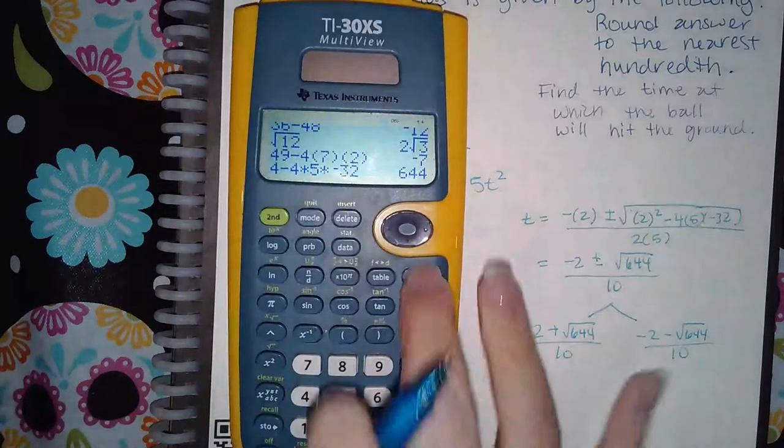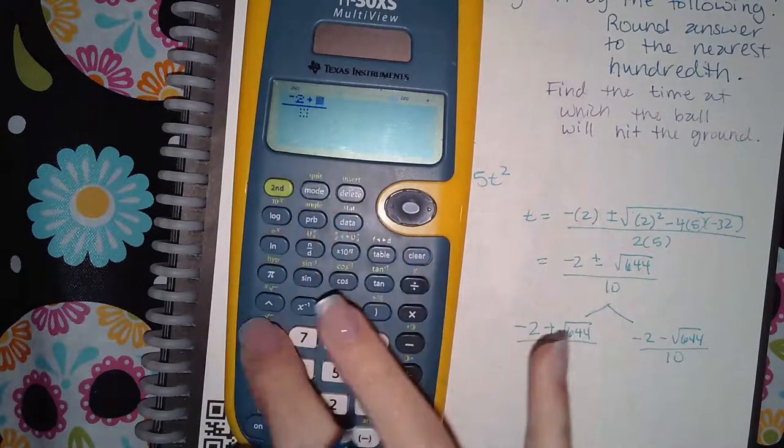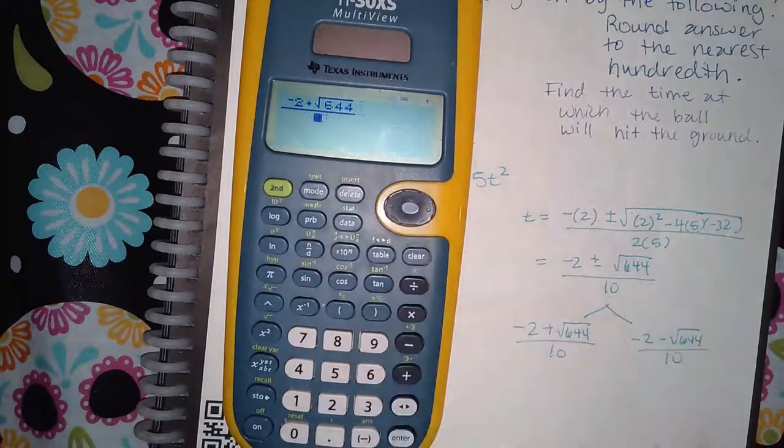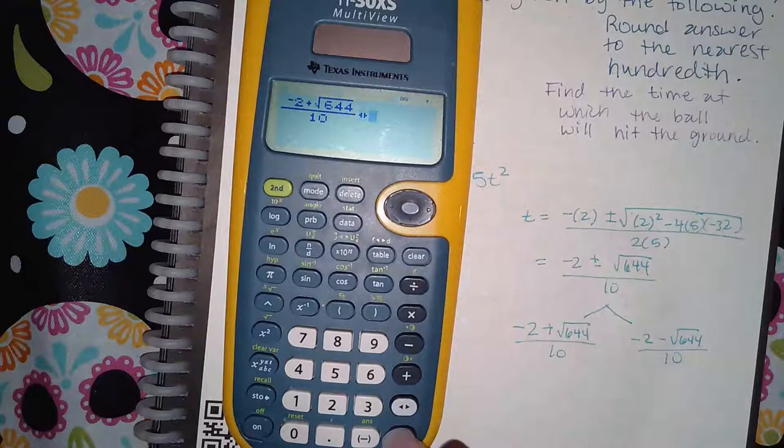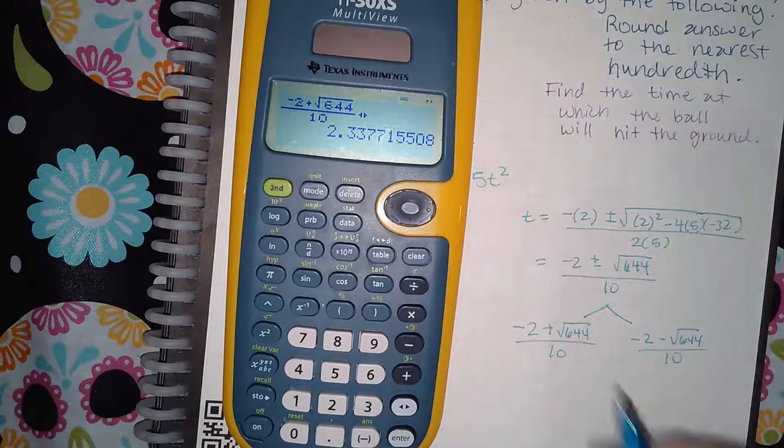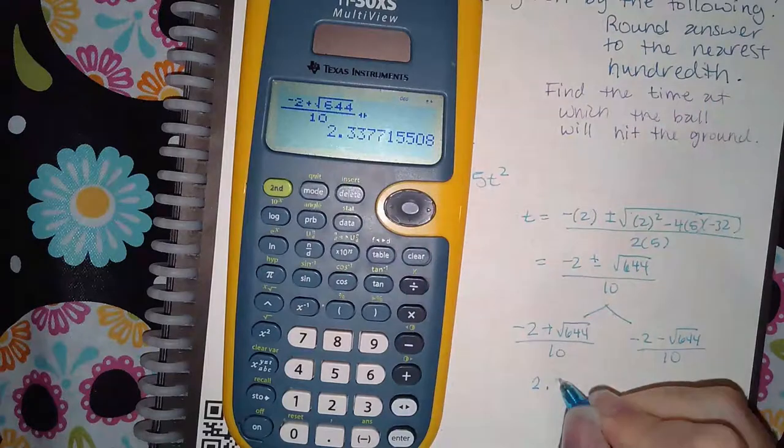For the first one, I'm going to type in a fraction: negative 2 plus the square root of 644 over 10. I'm going to hit the double arrow so that it converts to a decimal. The answer here is 2 point - to the nearest hundredth would make that 3, 4.